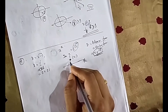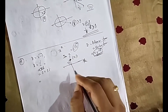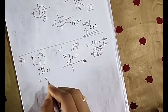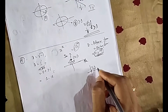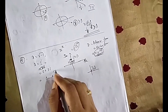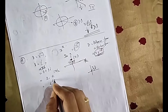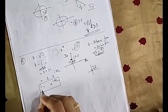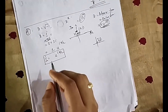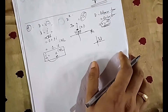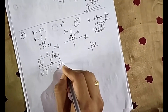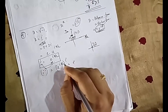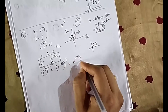In r-θ format, r is the length from the origin, which is 1. θ is the angle in the anticlockwise direction, which is π/2. So i in polar form is e^(iπ/2). Now i to the power i equals e^(iπ/2) to the power i. The powers multiply: i·i = −1, giving e^(−π/2). That is the answer.